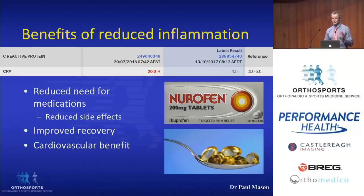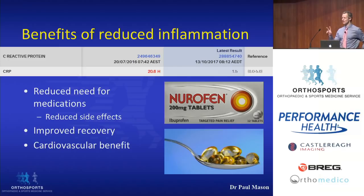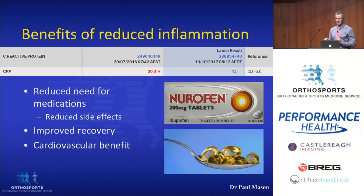The benefits of this are clear. C-reactive protein — a marker of blood inflammation we use regularly in our clinic — showed a large drop in inflammatory load for this patient. This means they don't need as many anti-inflammatory medications, they recover quicker from exercise, and as an aside, they have a massive cardiovascular benefit. There have been two very large prospective studies — one published in the New England Journal of Medicine and one in JAMA — which found that the difference in all-cause mortality between the group with the highest level of omega-3 in their cells versus the lowest was 10 times. The group with the bad levels had 10 times the increased risk of heart attack.